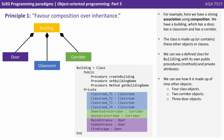For example, here we have a strong association using composition. We have a building which has a door, has a classroom, and has a corridor. The class is made up of or contains three other objects or classes. We can see a defined class for building with its own public procedures, methods and private attributes, and we can see how it's made up of other objects.